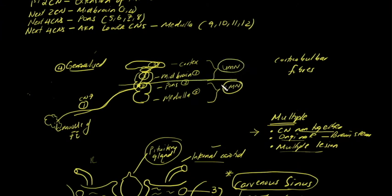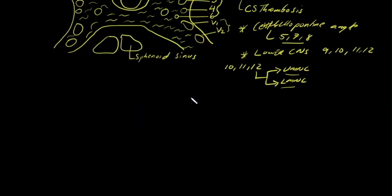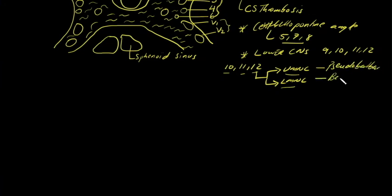For example, for the seventh nerve, an upper motor neuron lesion would be a stroke — it's not a palsy of the nerve itself but affects the fibers, which is why we call it facial weakness. A lower motor neuron example is Bell's palsy, which literally affects the nerve itself. For cranial nerves ten, eleven, and twelve: upper motor neuron signs give an exaggerated gag reflex and pseudobulbar palsy, while lower motor neuron gives bulbar palsy.